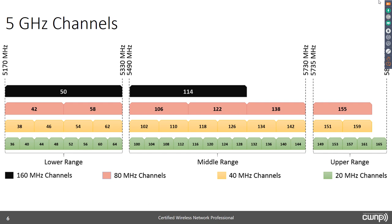In some environments you can use channels 36 to 64 as well as 149 to 161; in others only 36 to 64. This all comes back to regulatory domains — you must know what you're allowed to do. When you set up an AP and choose your country, it generally limits you to available channels, preventing accidental violations of local regulations.